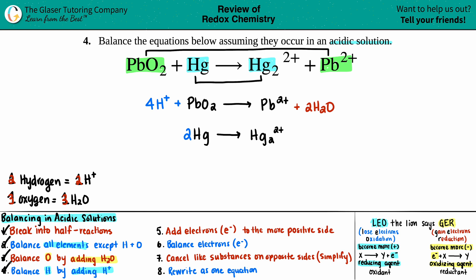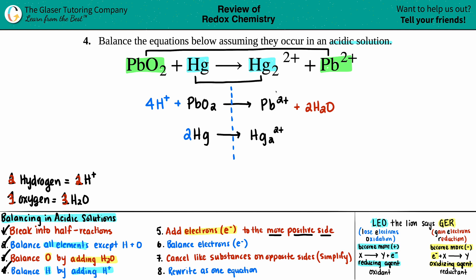Step five: since all elements are balanced, we now balance the electrons. Electrons are always represented as e⁻ and are always added to the more positive side. I like to split the equations down the middle to keep the sides clear. To add electrons, first look at the upper right-hand corner for charges. PbO₂ has no charge, Pb²⁺ has a charge, and H₂O has no charge.